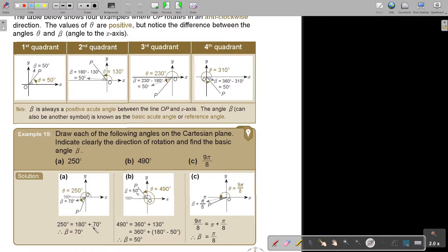So 180 plus 70 will be 250. Or otherwise, if you want to find it, just say, in this case, 250 minus 180, you get the 70. Now this one is more than 360. Do you see that? So actually, again, I can just subtract 360, and then I get 130.